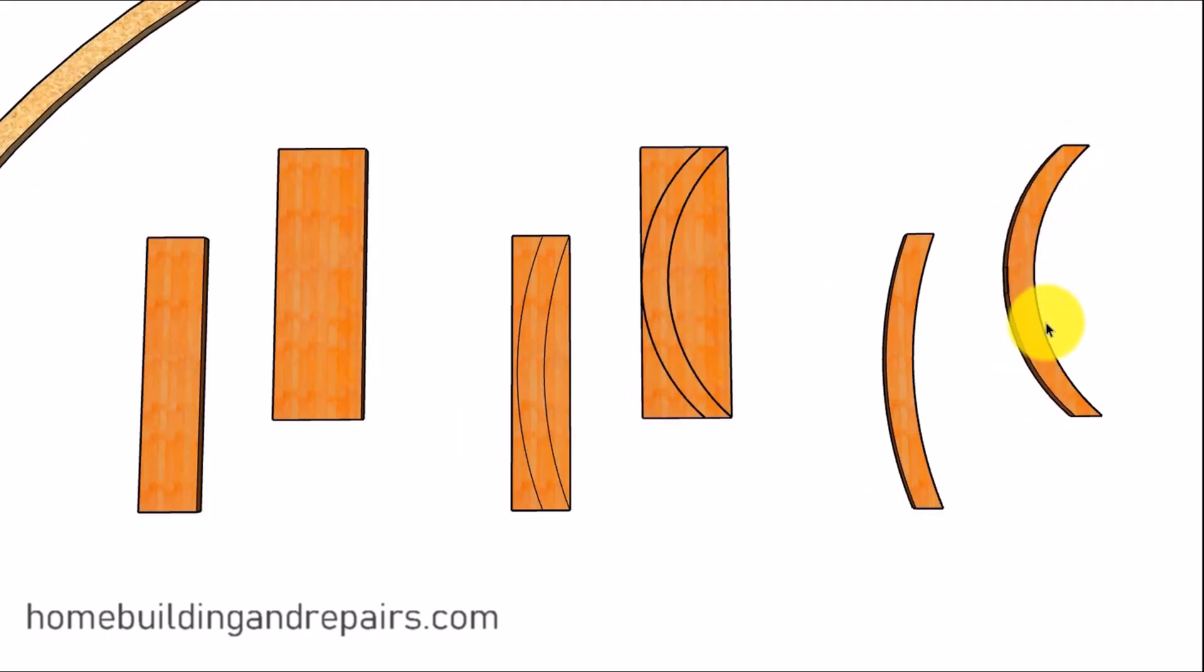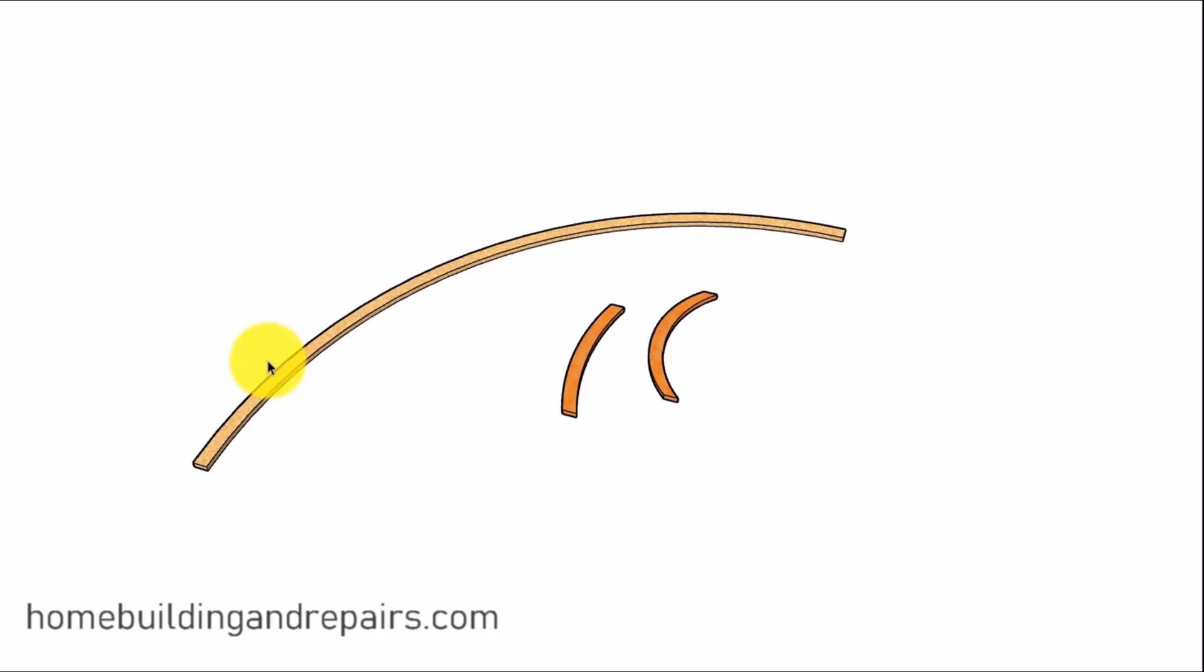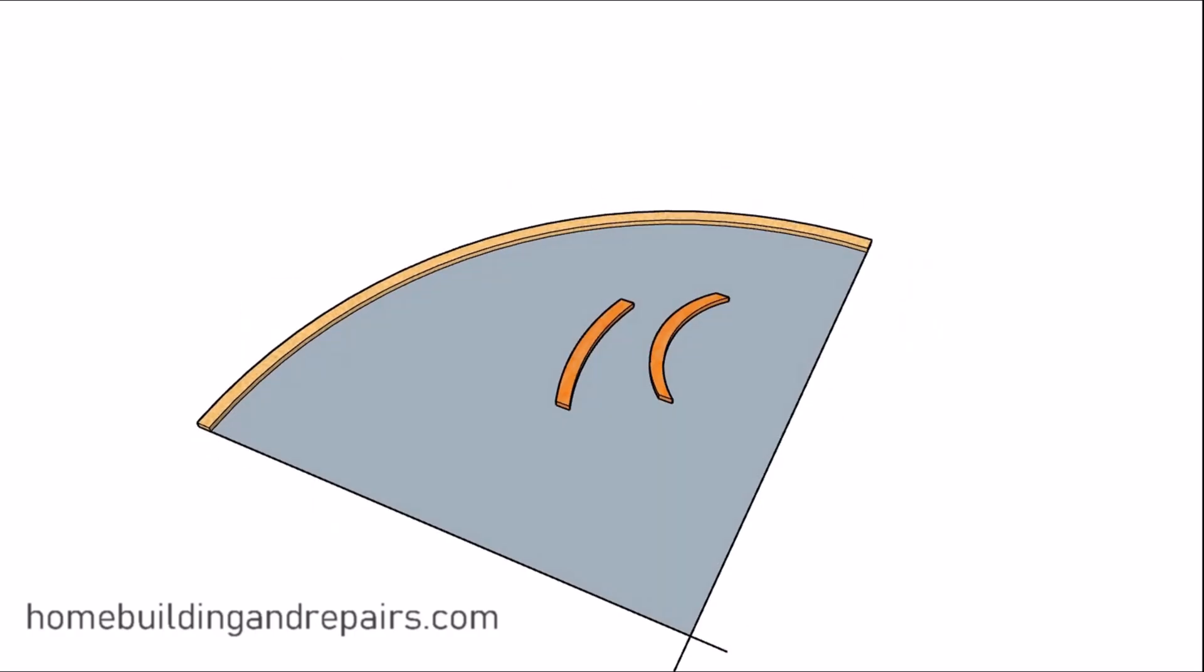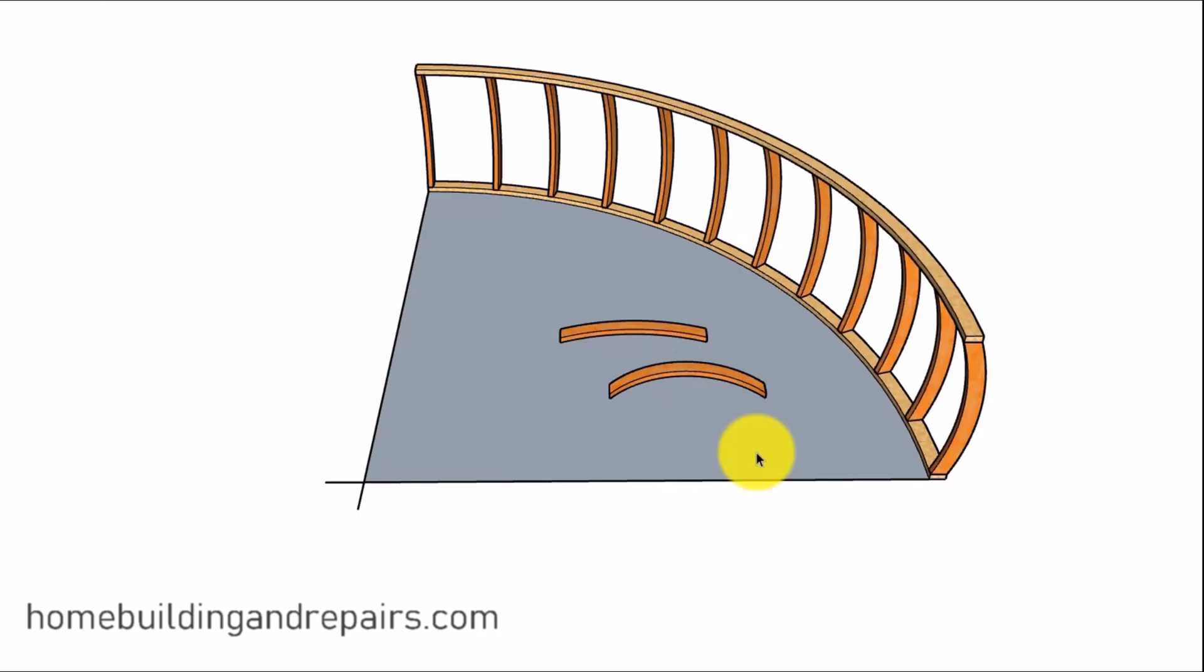You need something a little more curved, you can use a two by twelve. Something like this should work just fine. Then we will be able to cut all of our pieces that we need and assemble our wall. So let's go ahead and put it together.